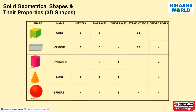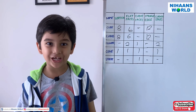A cuboid has 8 vertices, 6 flat faces, and 12 straight edges. A cylinder has 2 flat faces, 1 curved face, and 2 curved edges. A cone has 1 vertex, 1 flat face, 1 curved face, and 1 curved edge. A sphere has only 1 curved face.